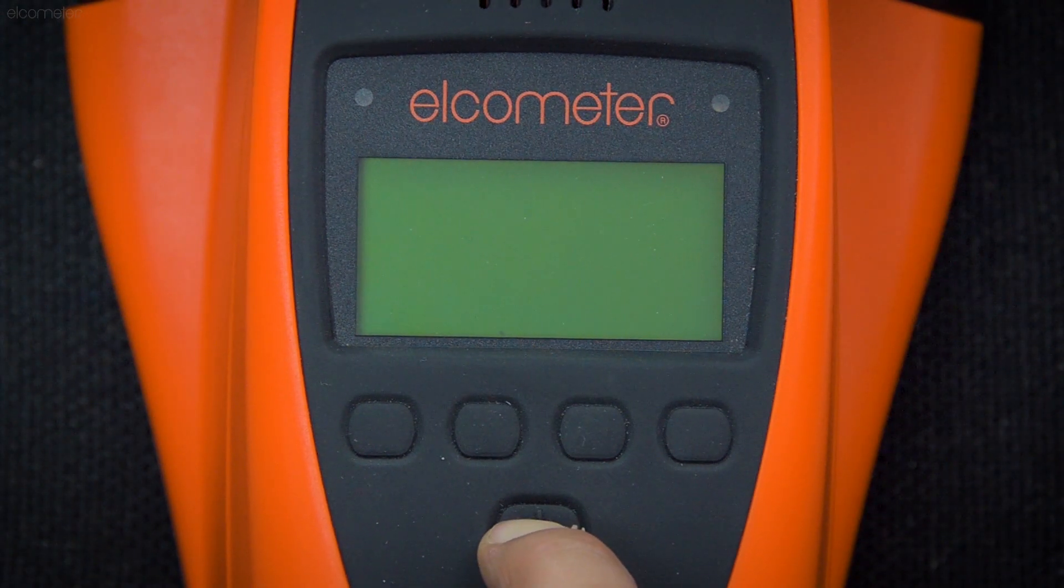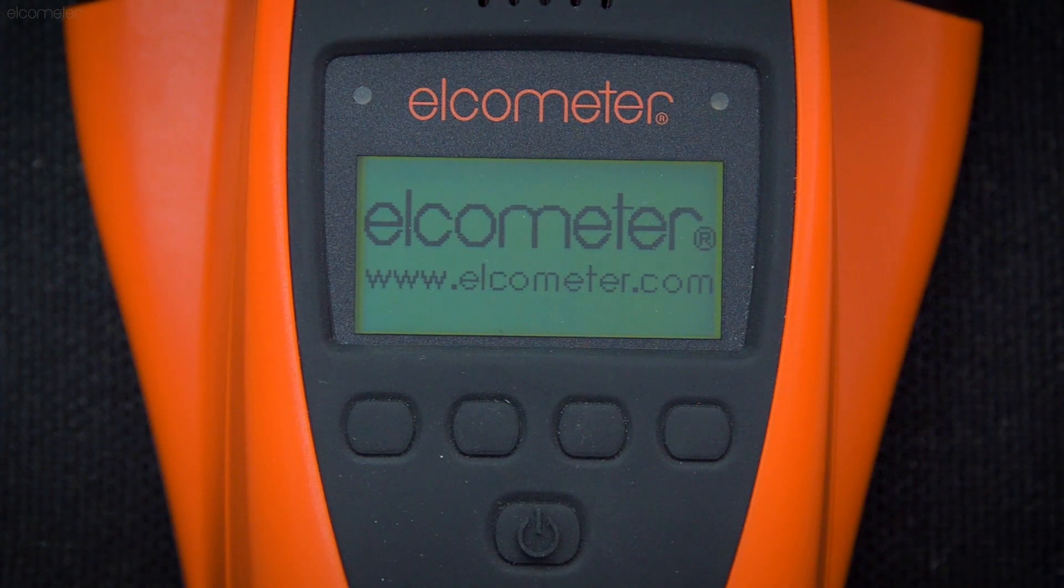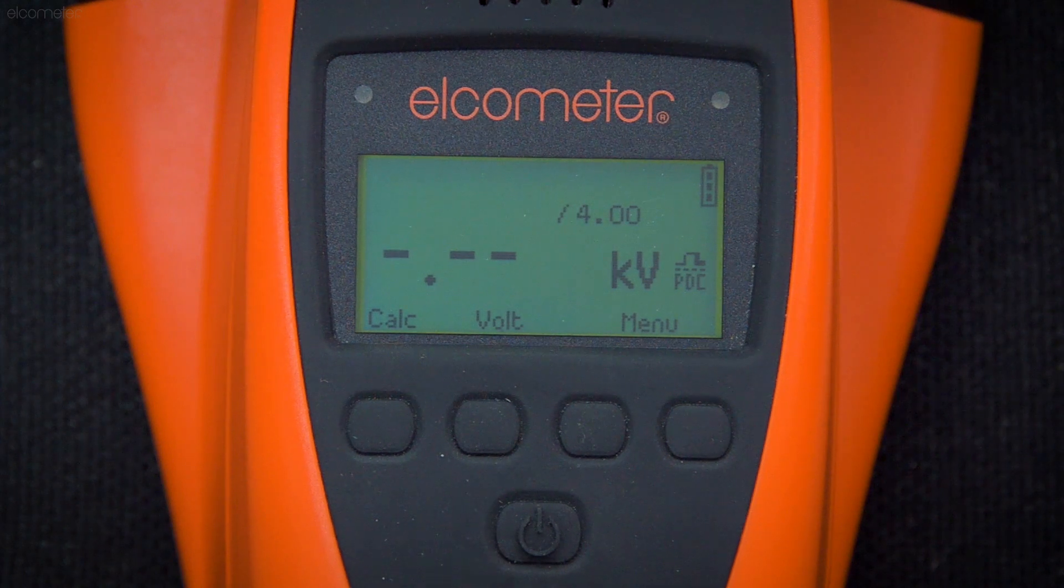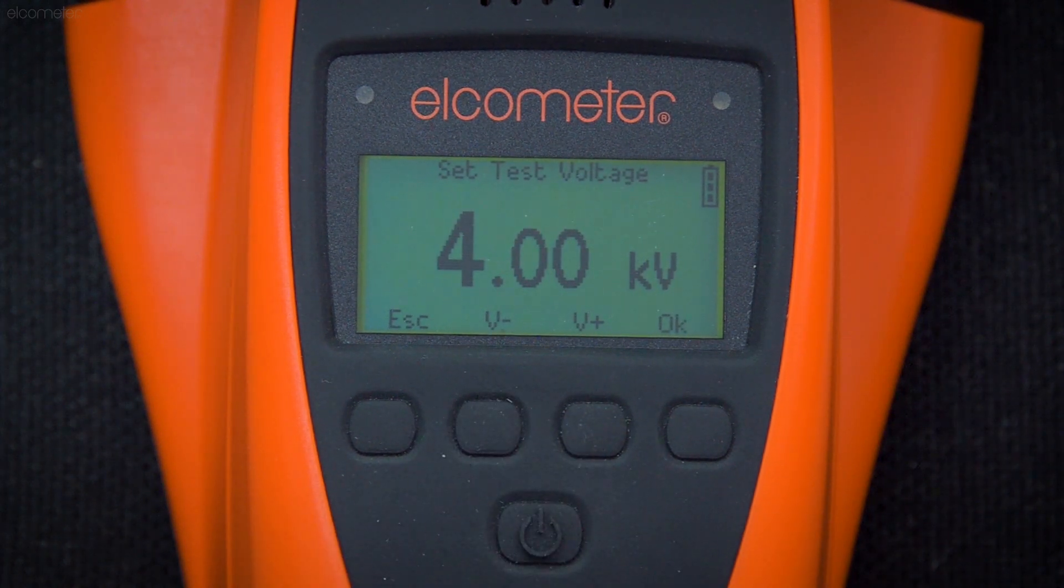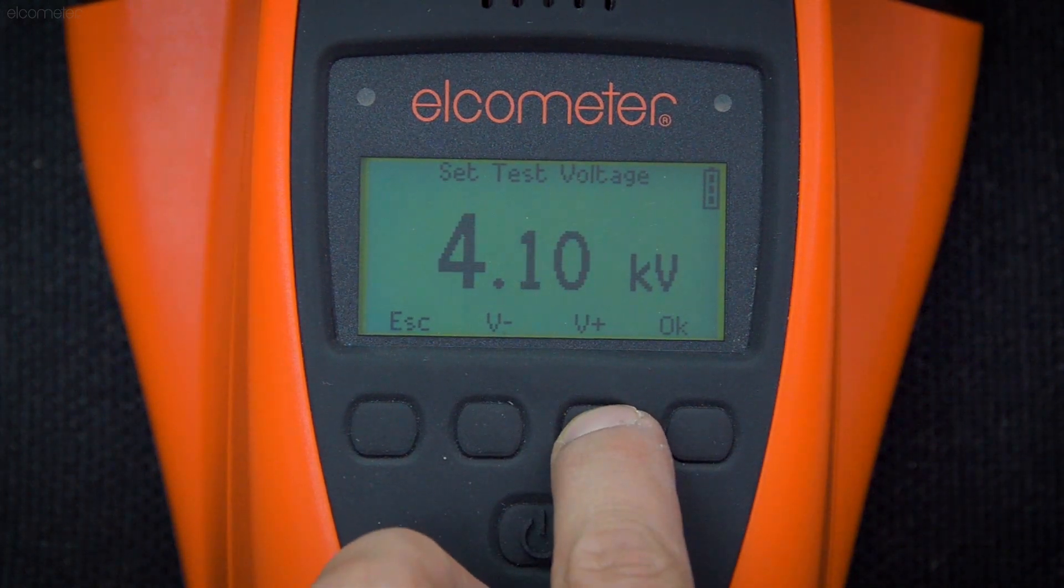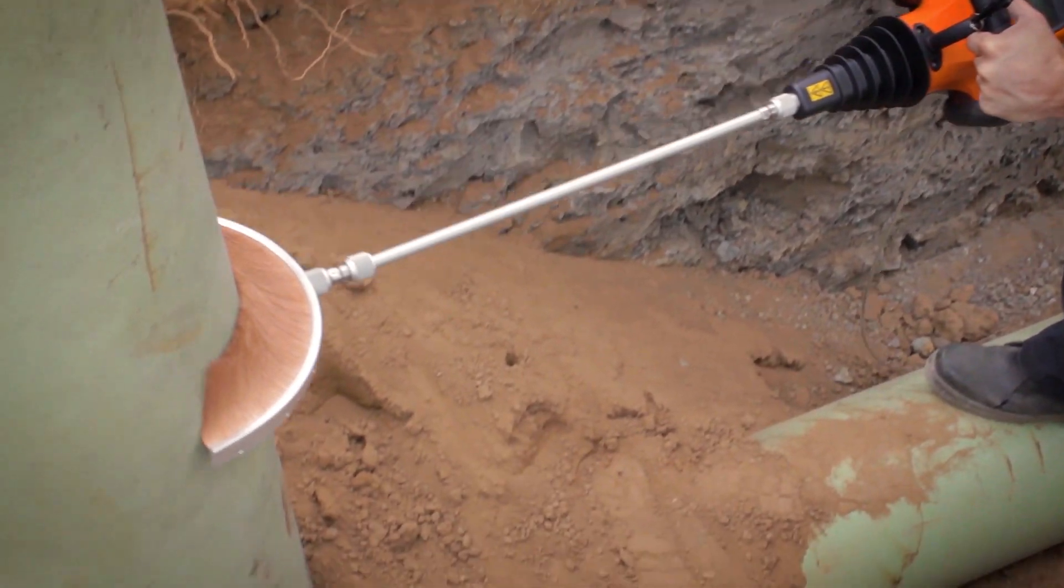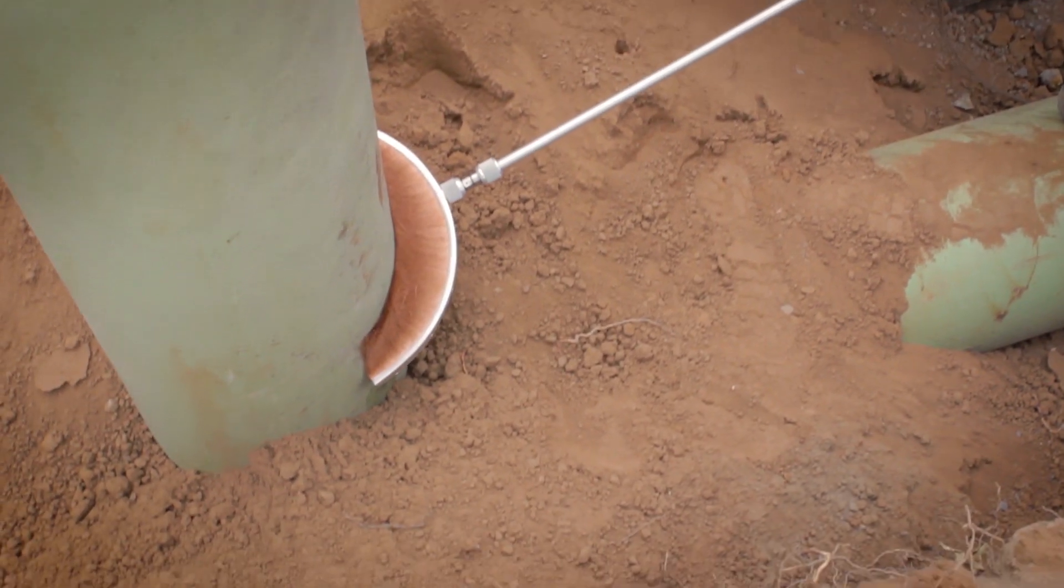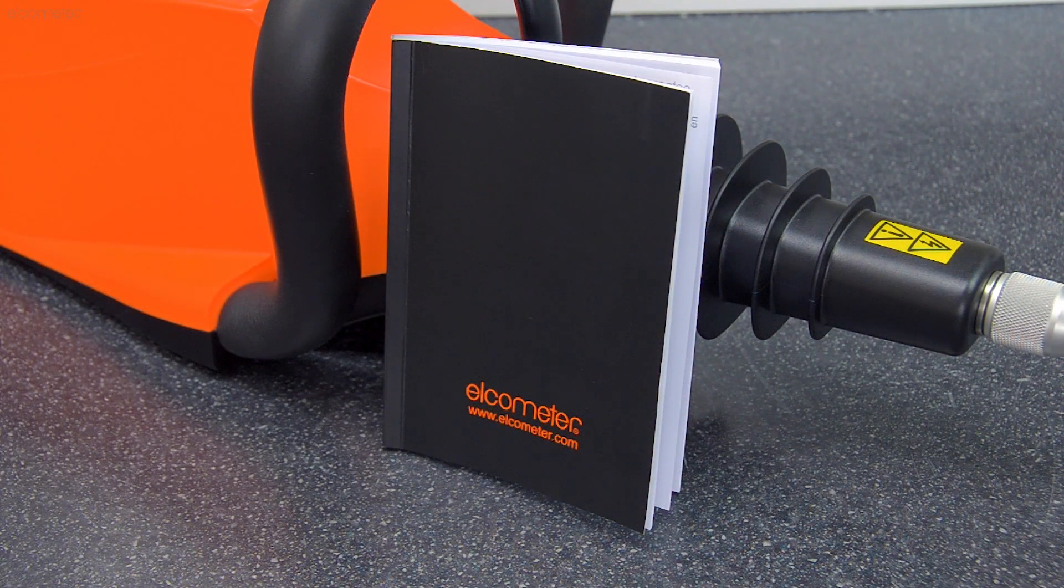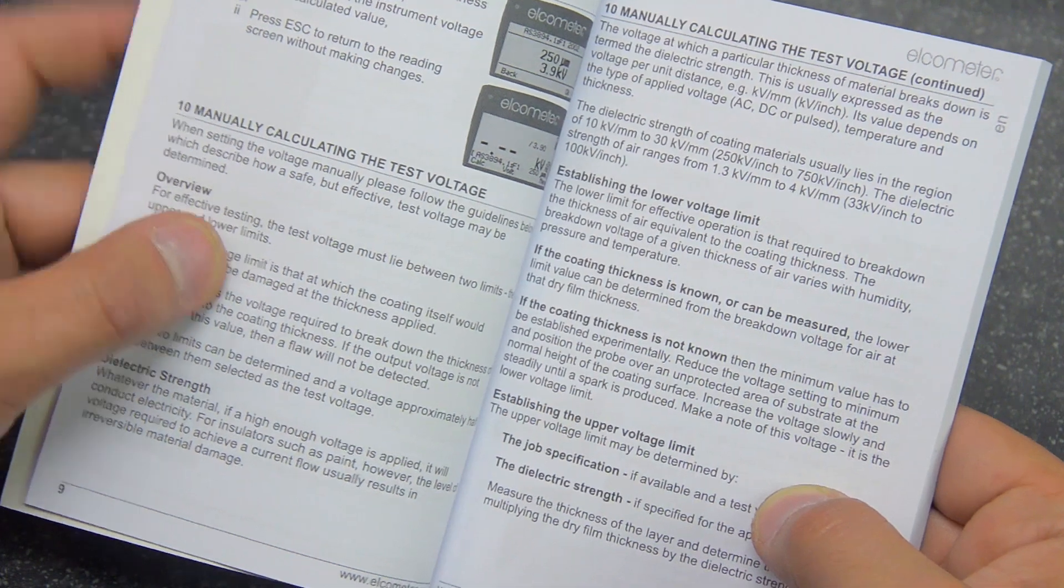With your chosen probe fitted, switch on the Elcometer 280, and select the voltage you wish to test with. The voltage you should use is dependent on the dielectric strength and thickness of the coating being tested, and or the test method or standard you're working to. The instruction book for the Elcometer 280 includes a detailed guide for working out your ideal test voltage.